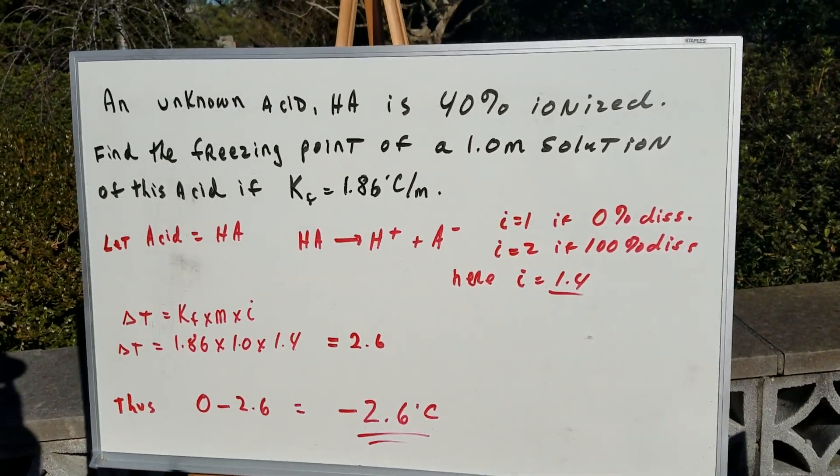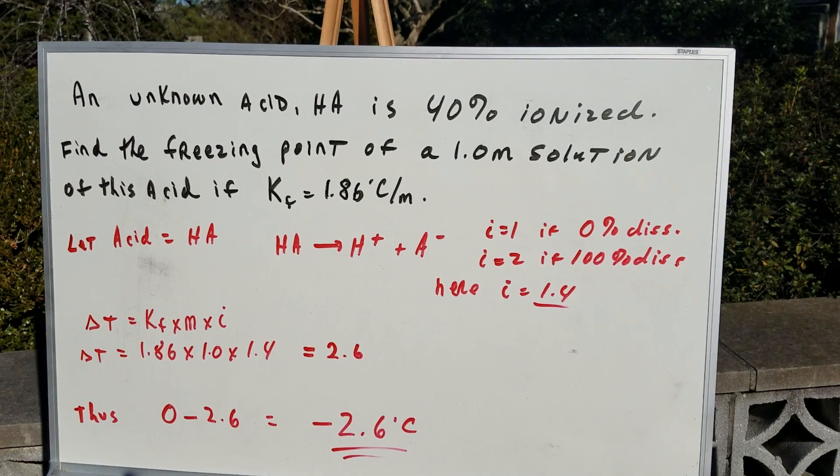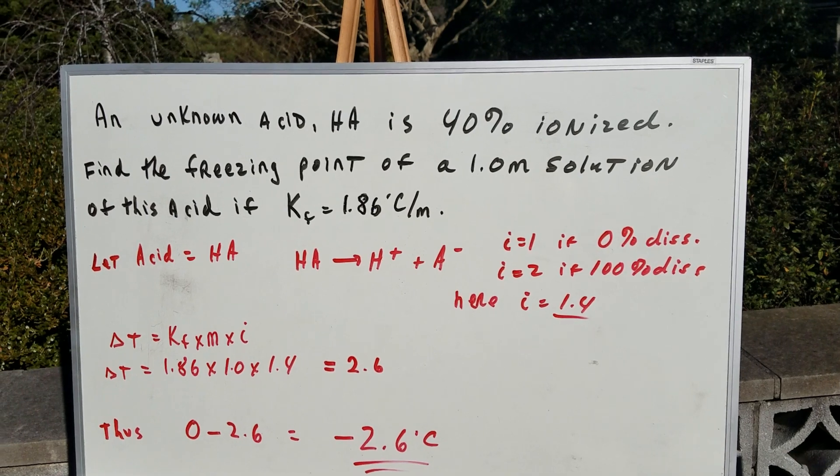It says here that an unknown acid, HA we'll call it, is 40% ionized. Find the freezing point of a one molal solution of this acid if the KF is given.